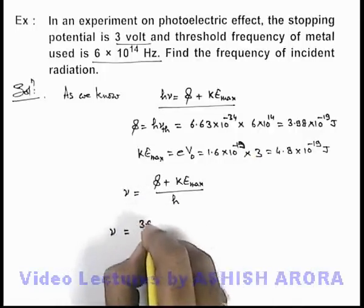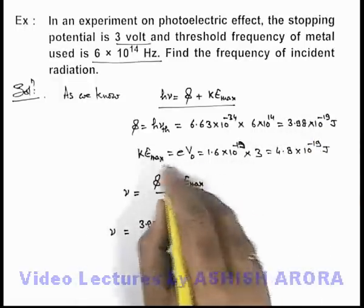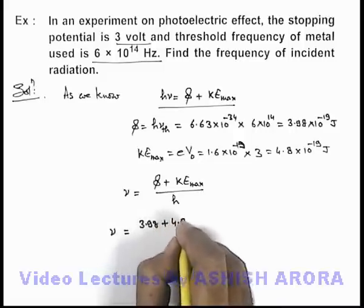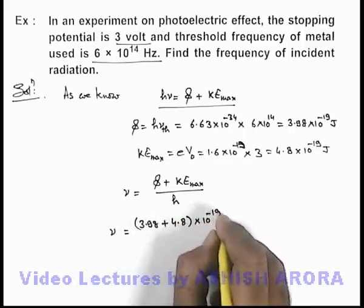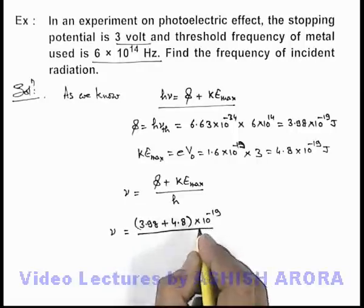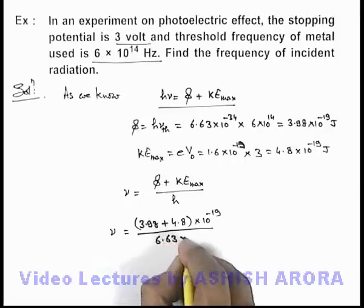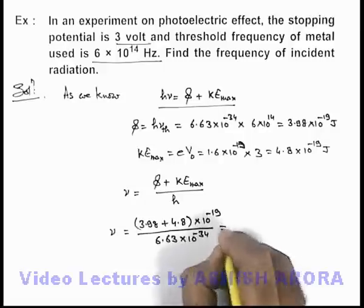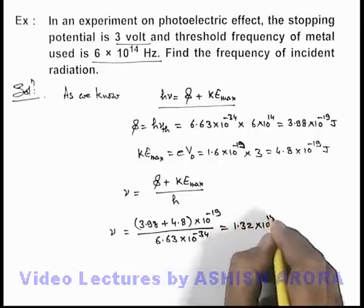Here, phi is 3.98 into 10 to the power minus 19 and kinetic energy is 4.8 into 10 to the power minus 19, divided by Planck's constant, which is 6.63 into 10 to the power minus 34. On simplifying, this will give us 1.32 into 10 to the power 15 hertz.